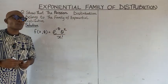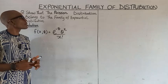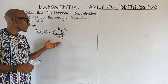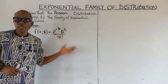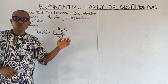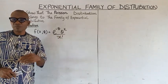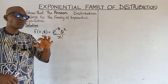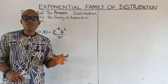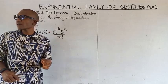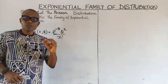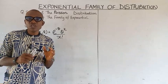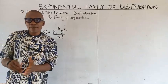Since for the exponential family of distribution we are comparing any distribution we have to the exponential family form, all we need to do is find a way to write the Poisson distribution so that we can compare it.